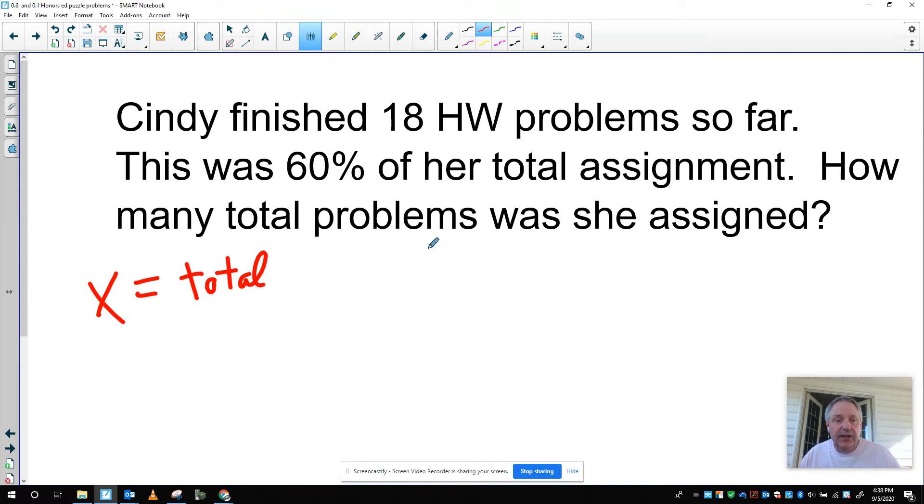So it says 60 percent of her total assignment. X is the total. So 60 percent of the total is going to be 60 percent times, so that would be 0.60 times the total, which is X. And that total is 18 problems. So let's go through that again. So 60 percent of the total is, there's my equal sign, 18. So that makes sense. We do want you to be able to take English and write it as algebra.